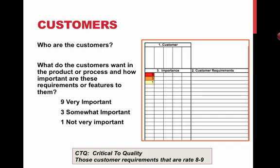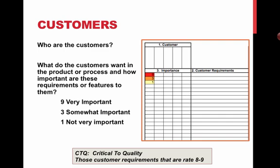I'd like to review with you the House of Quality, and we'll start out by looking at the first three rooms. Those first three rooms of the House of Quality are going to be identification of our customers, and we need to think carefully about everyone in that chain involved in handling that device along the way — most definitely the end user, but also everyone from product design to delivering the product to market. We'll want to make sure we identify who they are.